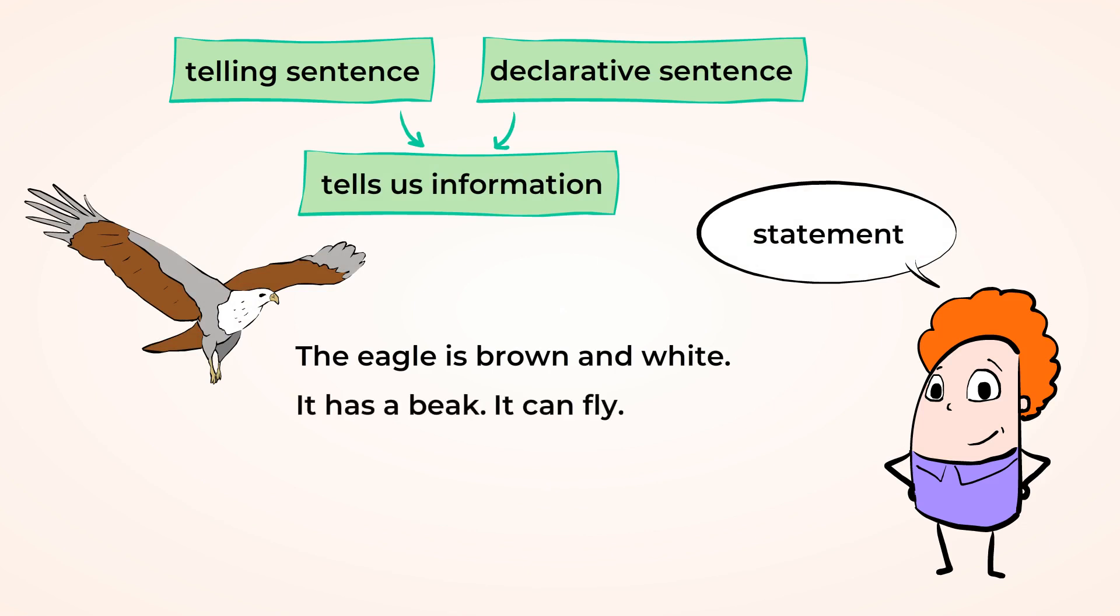Now these sentences tell us information about the eagle, like what color it is, what it has, and what it can do. We use telling sentences all the time to give other people information.